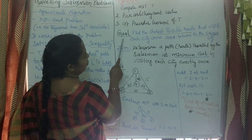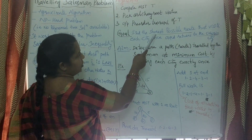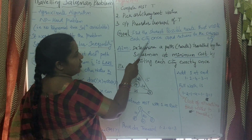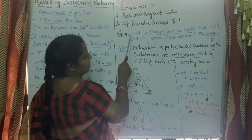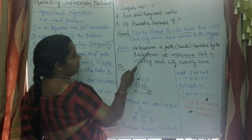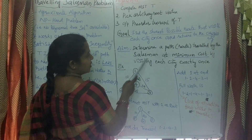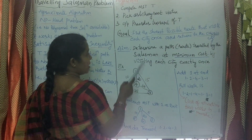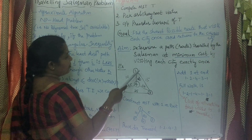Its goal is finding the shortest possible route which visits each city exactly once and returns to the origin city. Its aim is to determine the path or route travelled by the salesman at minimum cost by visiting each city exactly once.